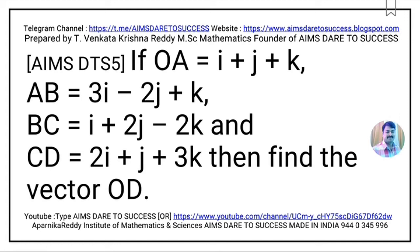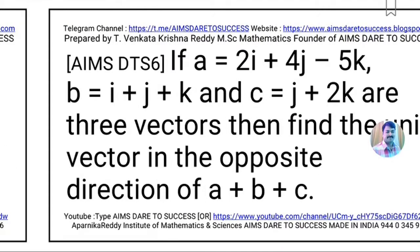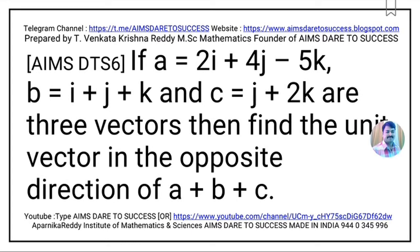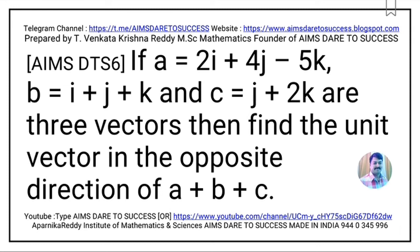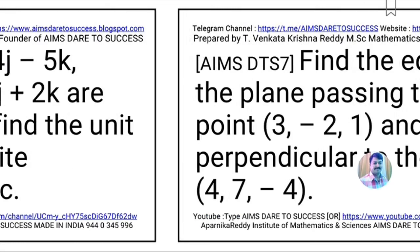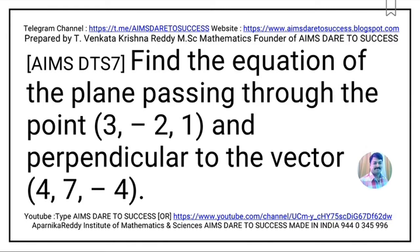Fifth question: If OA = i + j + k, AB = 3i − 2j + k, BC = i + 2j − 2k, and CD = 2i + j + 3k, then find the vector OD. This question is from Addition of Vectors. Sixth question: If B = i + j + k and C = j + 2k, then find the unit vector in the opposite direction of A + B + C. This is also from Addition of Vectors. Seventh question: Find the vector equation of the plane passing through the point (3, −2, 1) and perpendicular to the vector (4, 7, −4). This is from Product of Vectors.